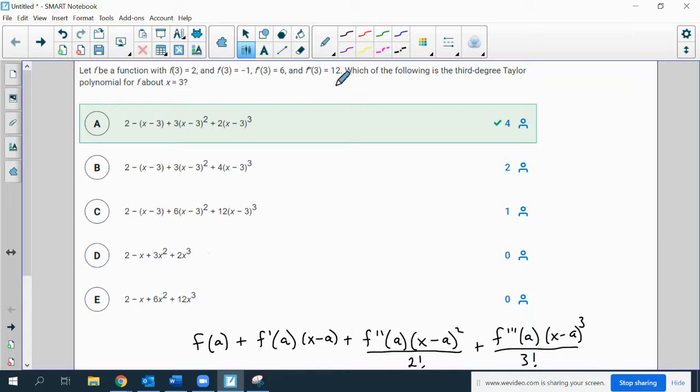So what we have is 2 plus negative 1 times x minus 3 plus 6 times x minus 3 squared over 2 factorial, which is 2, plus 12 times x minus 3 cubed over 3 factorial. 3 factorial is 6, so we end up with 12 divided by 6 is 2, and 6 divided by 2 is 3, so A is our correct answer.